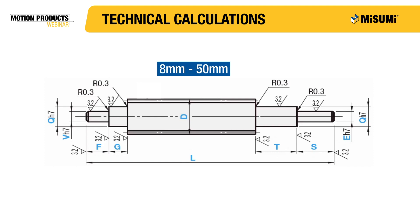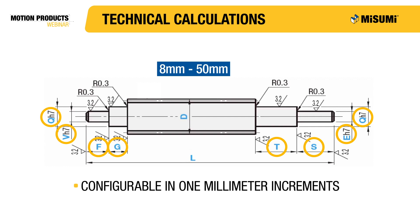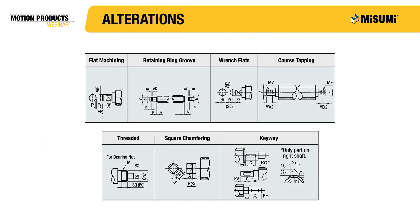Misumi offers lead screws in the most popular thread sizes, from 8 millimeters to 50 millimeters. More importantly, dimensions shown in blue are configurable in 1-millimeter increments. This is important, as in many situations it allows you to order a finished lead screw that can be bolted onto your application without needing any secondary machining operations. If that's not enough for your application, the lead screws are available with optional modifications.